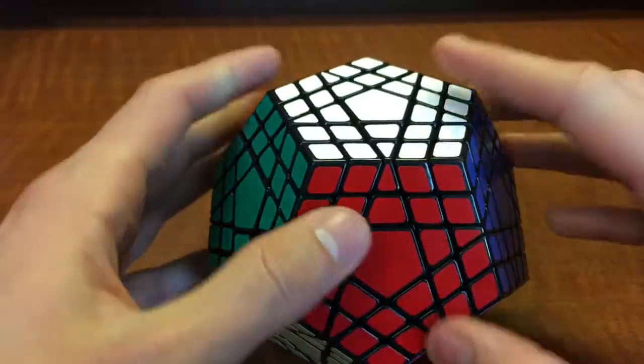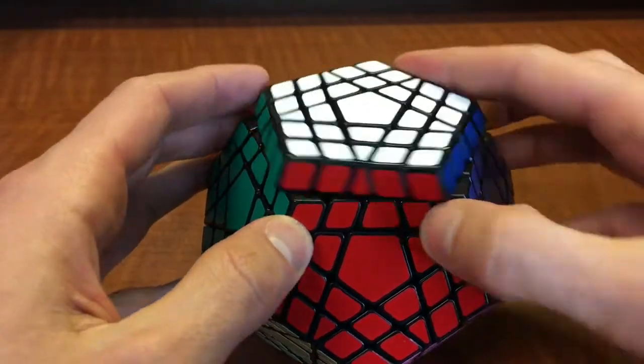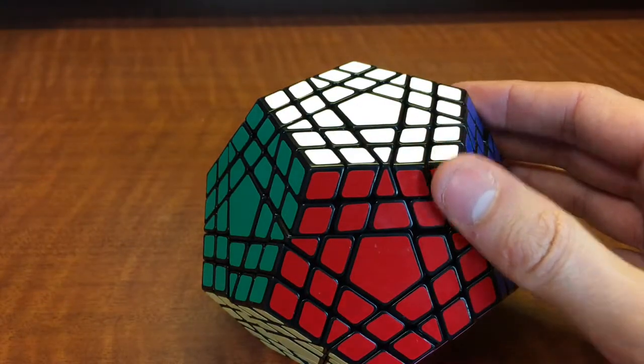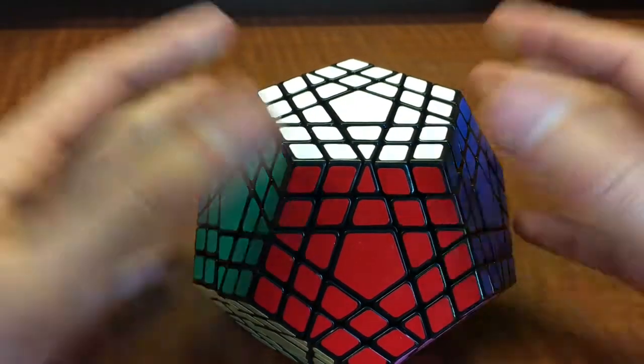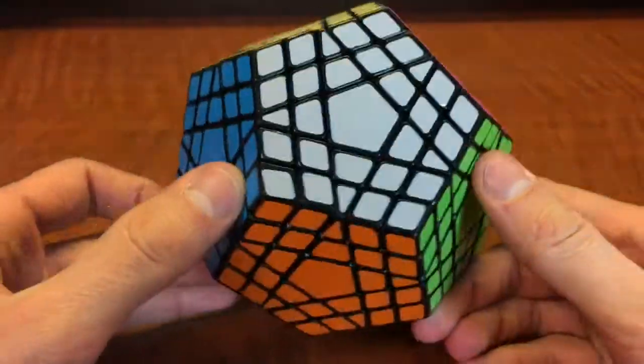It does help when turning, because most of the time it does turn exact. It doesn't overshoot or anything. Catches do happen on a puzzle of this size, just because there are so many moving pieces. It's kind of expected. But again, I'm not going to be speed solving this puzzle, so I'm not too worried.